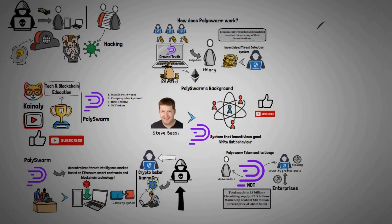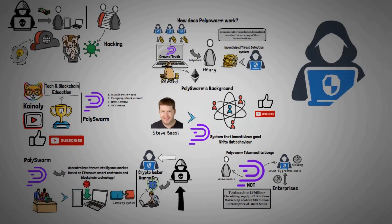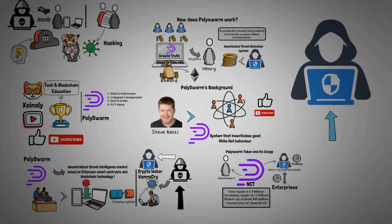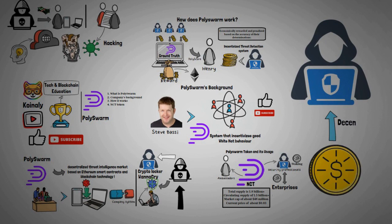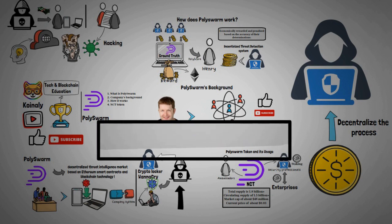There is a growing need for security experts as our world gets more connected. By incentivizing these experts properly, many will avoid black hat activities. The primary reason for creating PolySwarm and Nectar is to decentralize the process, giving the world greater security potential available to everyone. There is still massive work for PolySwarm to do, but if they keep going there is great potential.